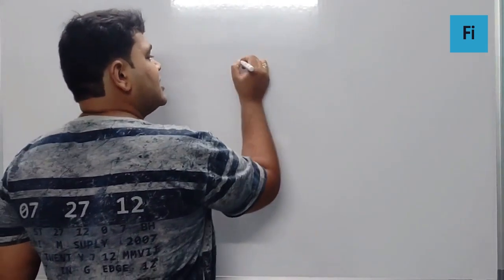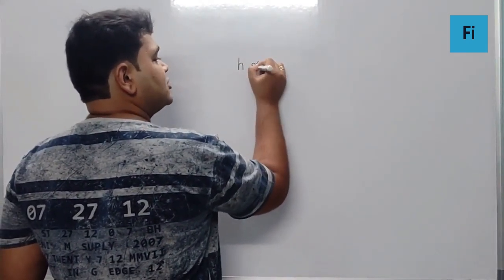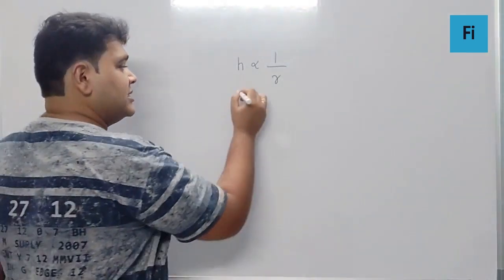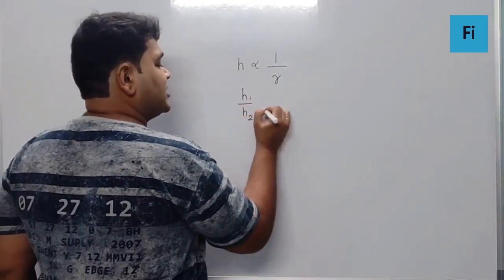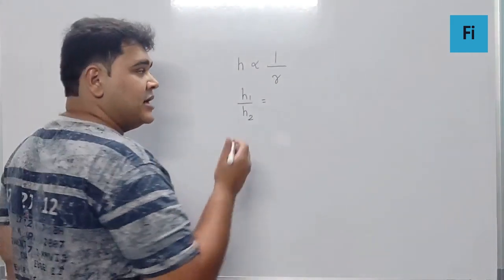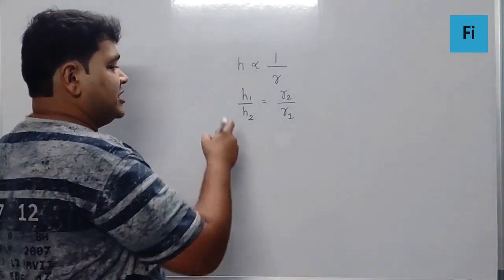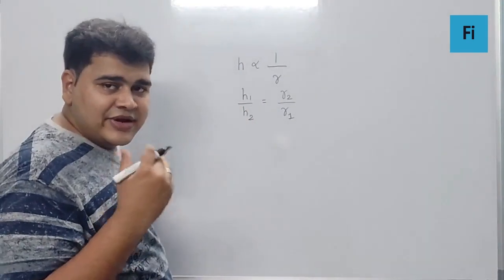You need to understand that in this scenario, the height is always inversely proportional to the radius, which means the amount of height which rises in the capillary is inversely proportional to the radius of that capillary. That means the more the radius, the less will be the height rising.